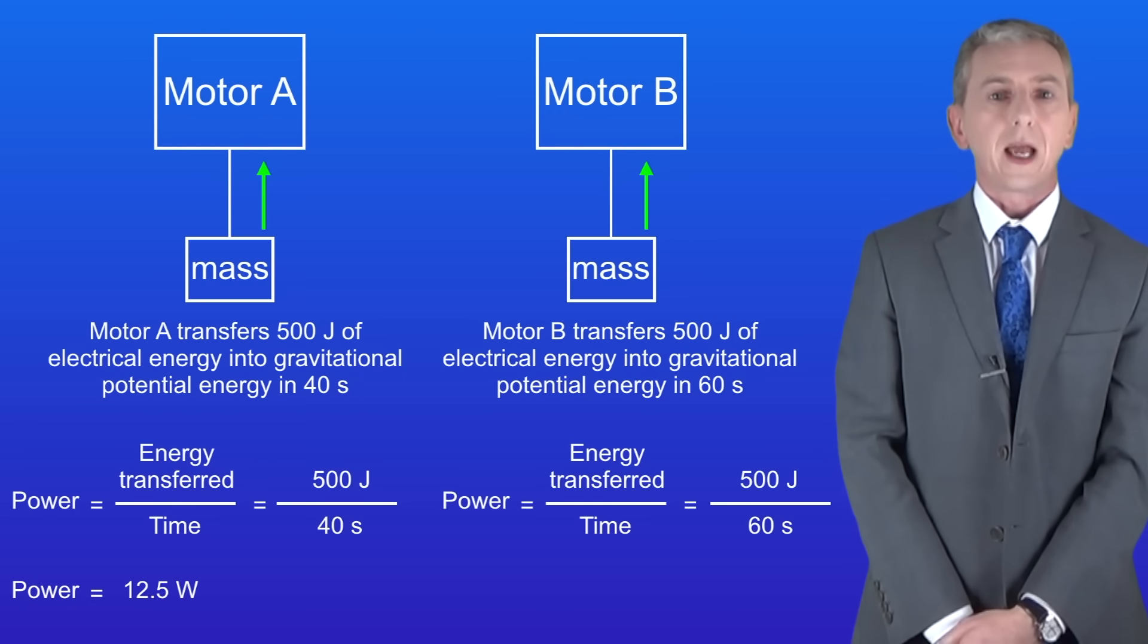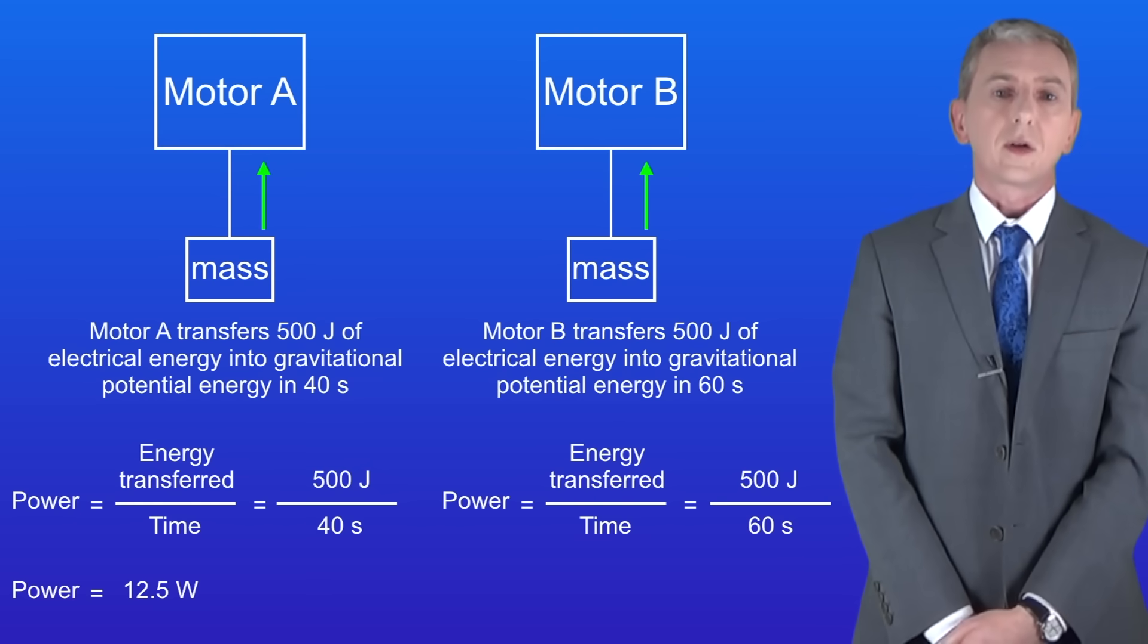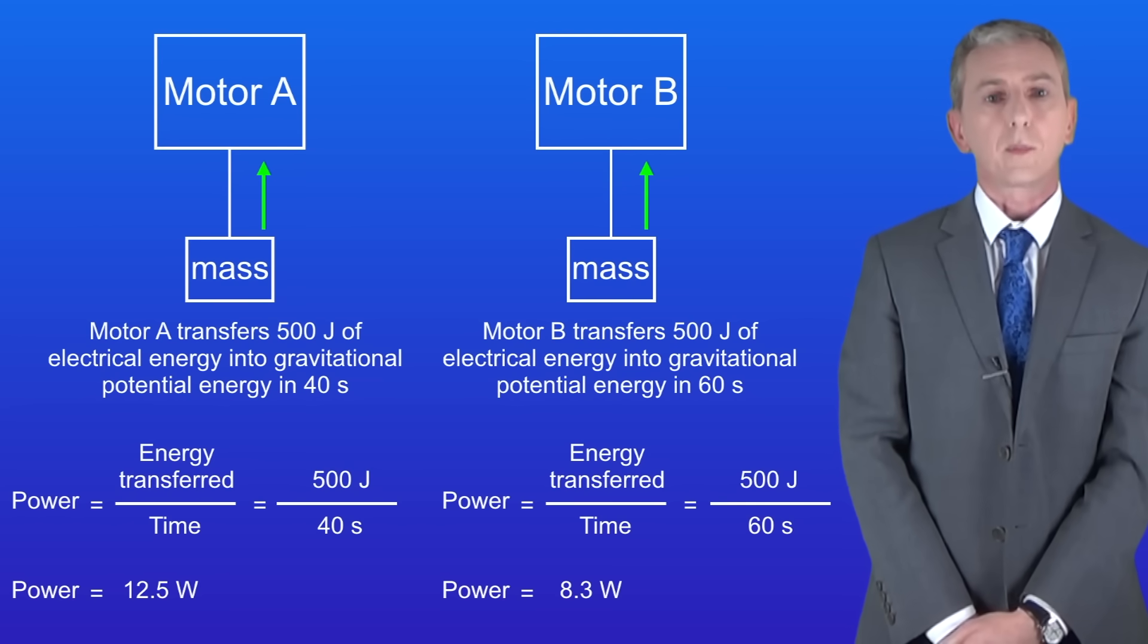Looking at motor B, again the energy is 500 joules but now the time is 60 seconds. Putting these numbers into the equation gives us a power of 8.3 watts to one decimal place.